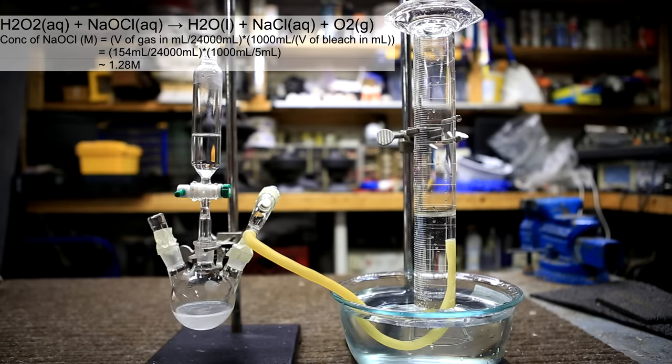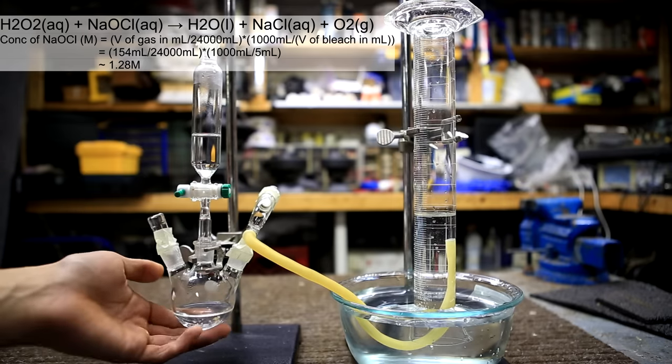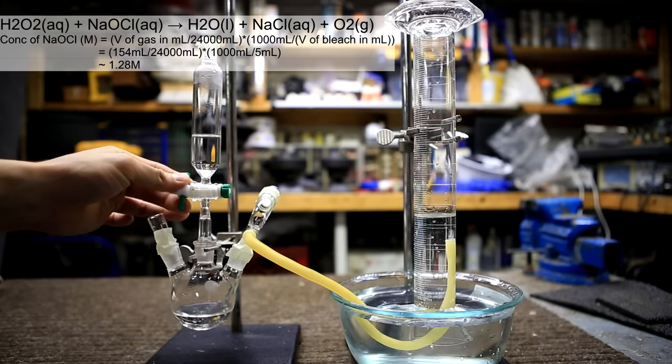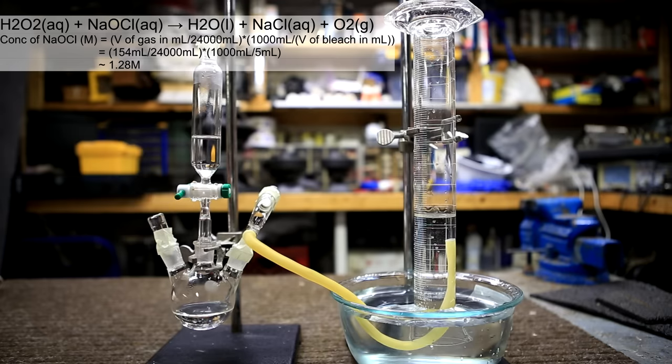The equation that I used is shown above and the result I obtained was that the sodium hypochlorite concentration was about 1.28 molar.